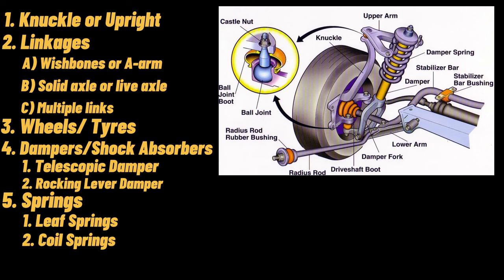2. Coil springs. The coil shape is the best energy-storing shape for a given weight, and a coil spring stores energy when a force is acted on it — it twists and stores the torsional energy.